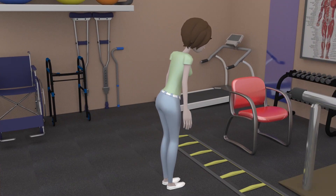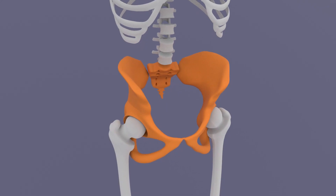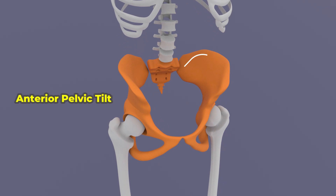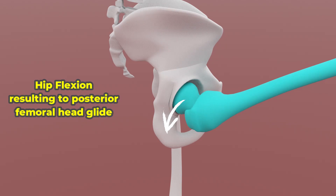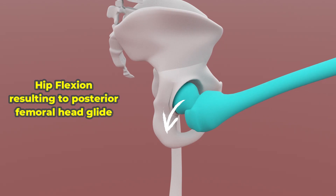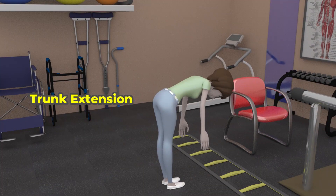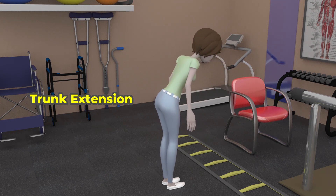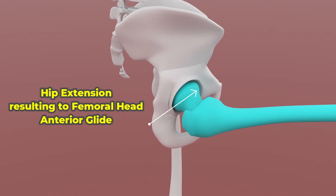During trunk flexion, when a person tries to touch the toes, the pelvis tilts anteriorly while the hip flexes, resulting in a femoral head posterior glide. During trunk extension, when a person comes back to standing, the hip extends resulting in a femoral head anterior glide.